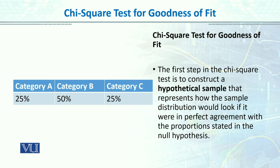What is our null hypothesis? The null hypothesis is a hypothetical sample that represents how the sample distribution would look if it were in perfect agreement with the proportions stated in the null hypothesis. The null hypothesis states that in category A there are 25 people, the majority exercising once a week at 50%, and in category C there are 25%. This proportion suggested in the null hypothesis is what we call the 'no difference' hypothesis, and we test whether our observed data matches this hypothetical null hypothesis data.